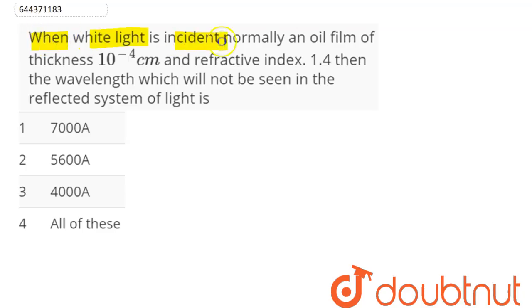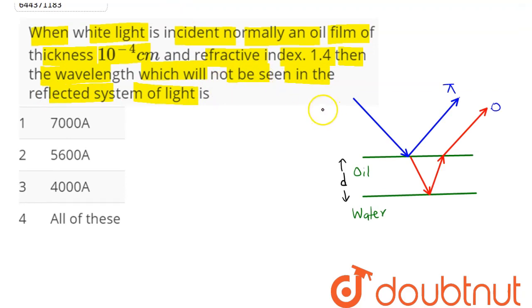Question: When white light is incident normally on an oil film of thickness 10^-4 cm and refractive index 1.4, then the wavelength which will not be seen in the reflected system of light is.